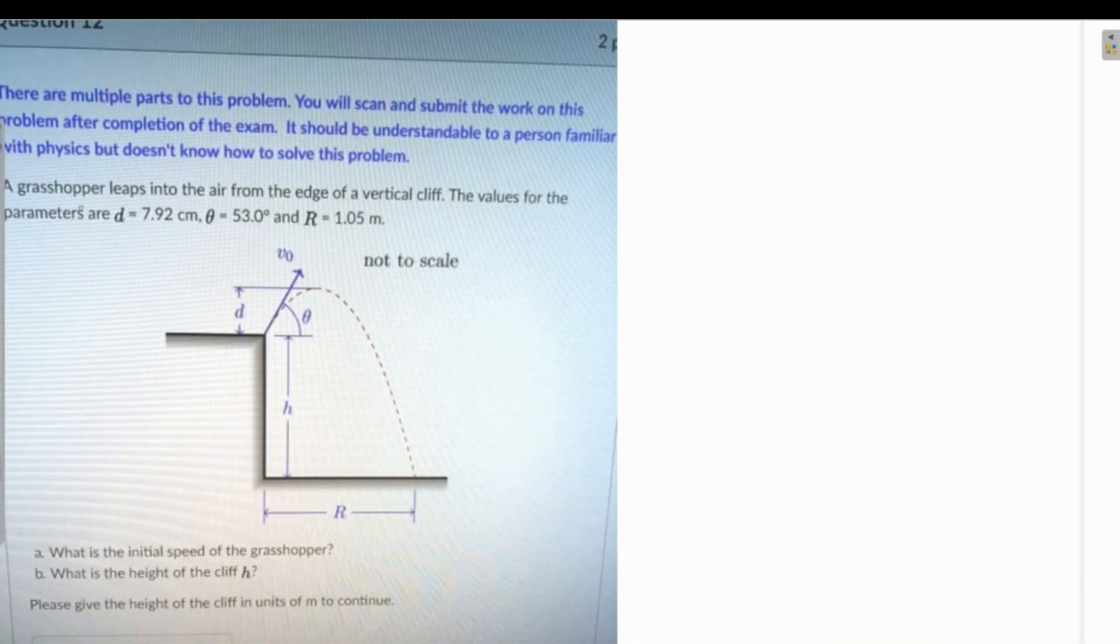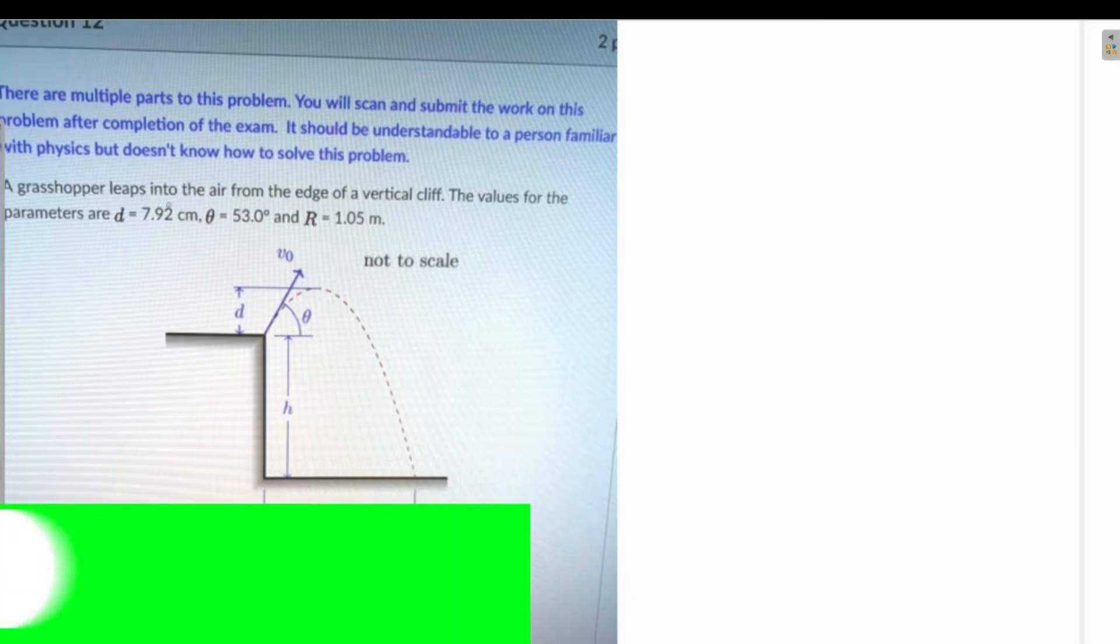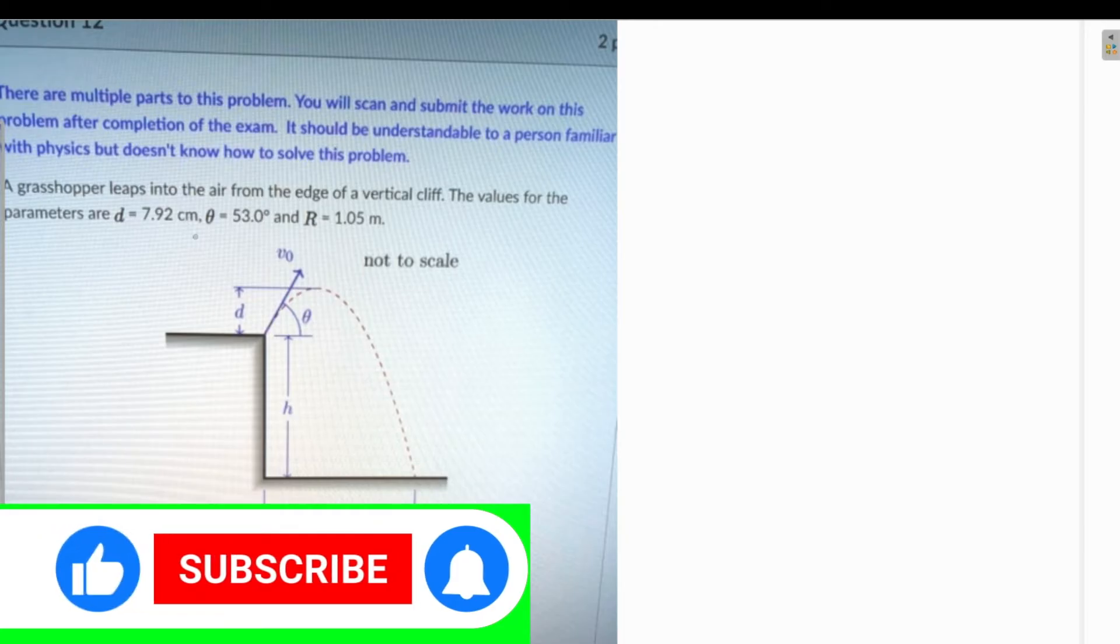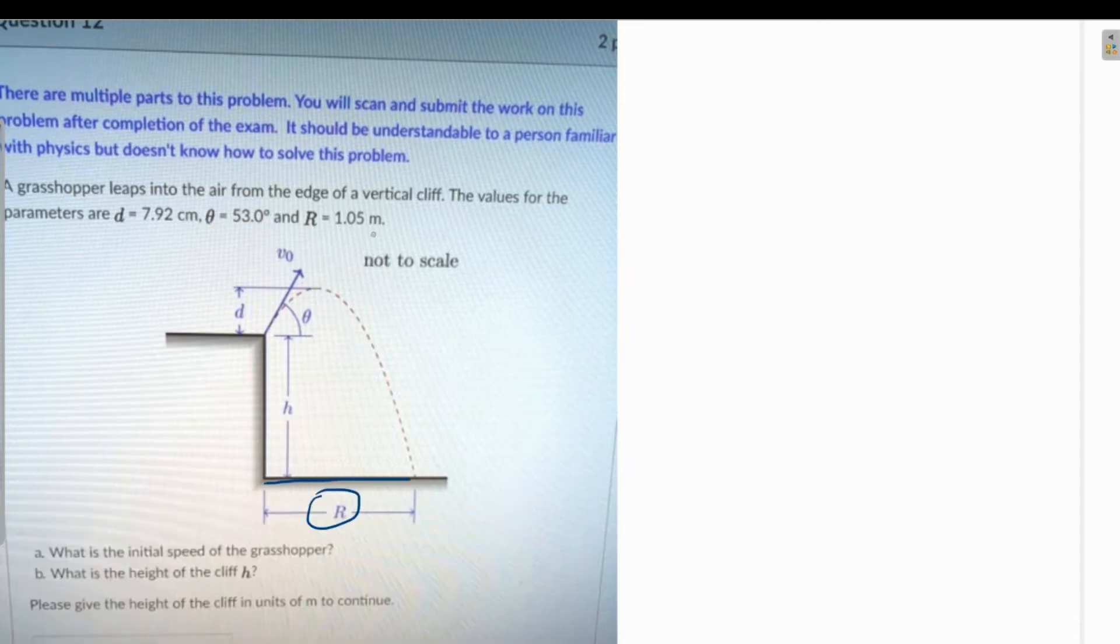It's given that a grasshopper leaps into the air from the edge of a vertical cliff. The values of the parameters are d is 7.92 centimeters, angle is 53 degrees, and R as in the horizontal distance is 1.05 meters. Part a asks: what is the initial speed of the grasshopper?